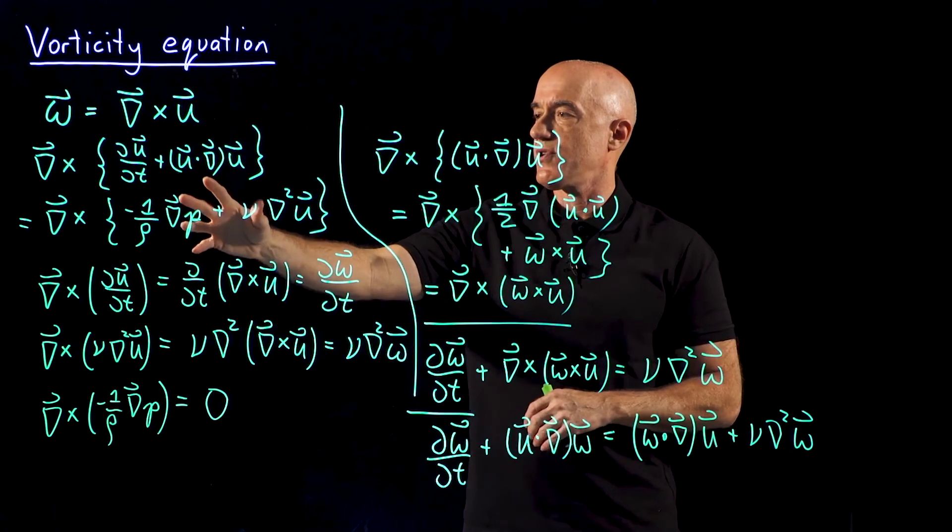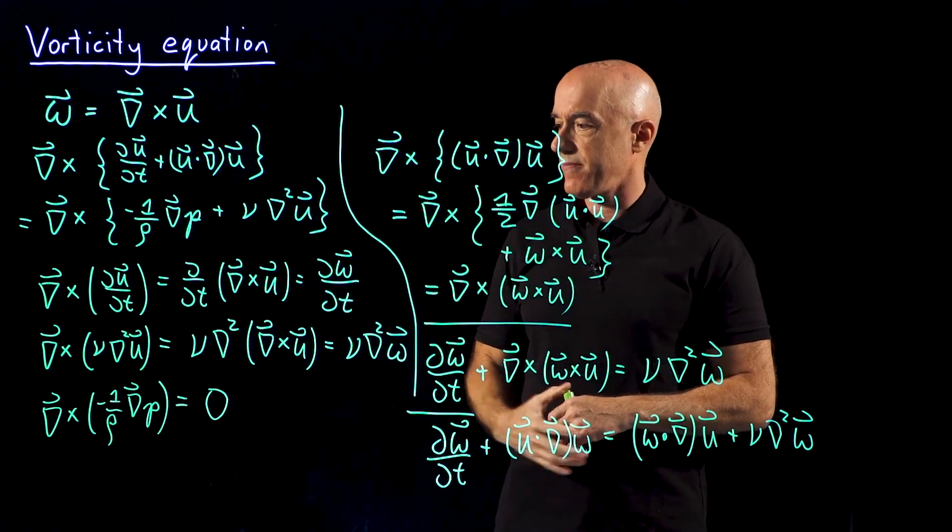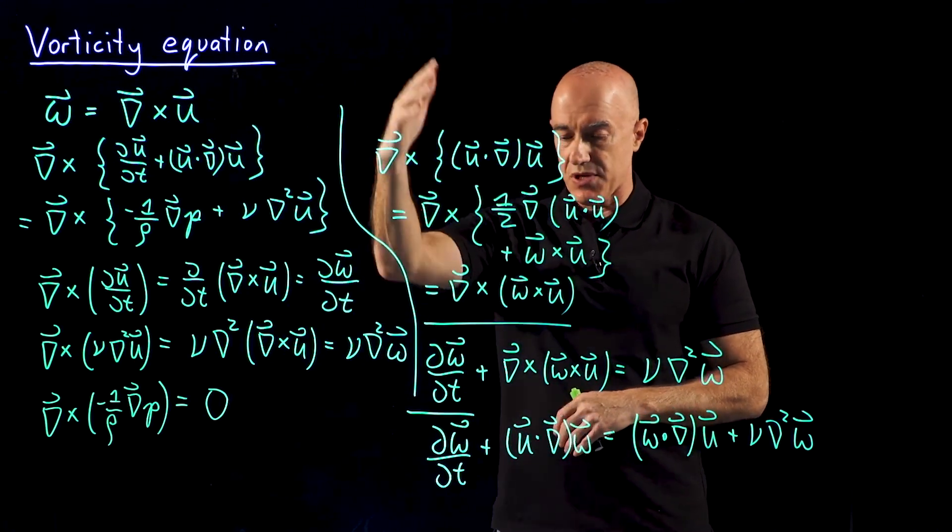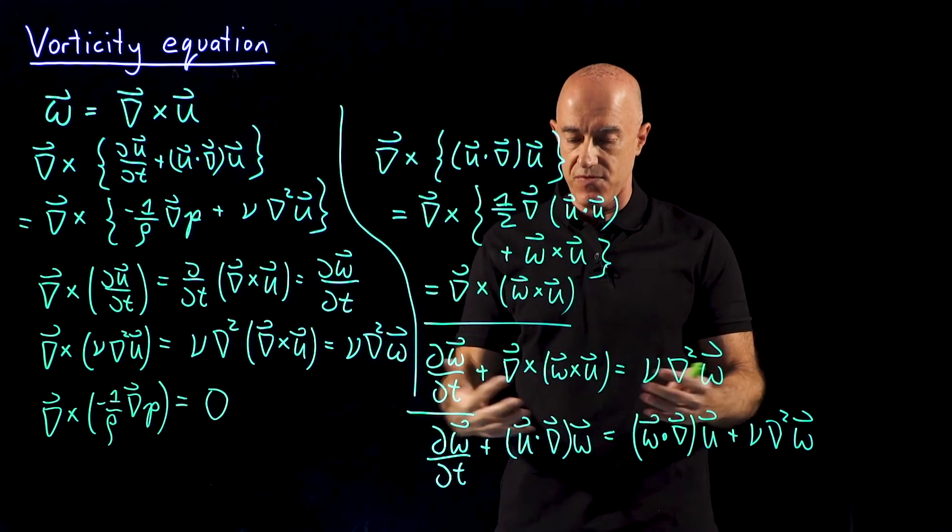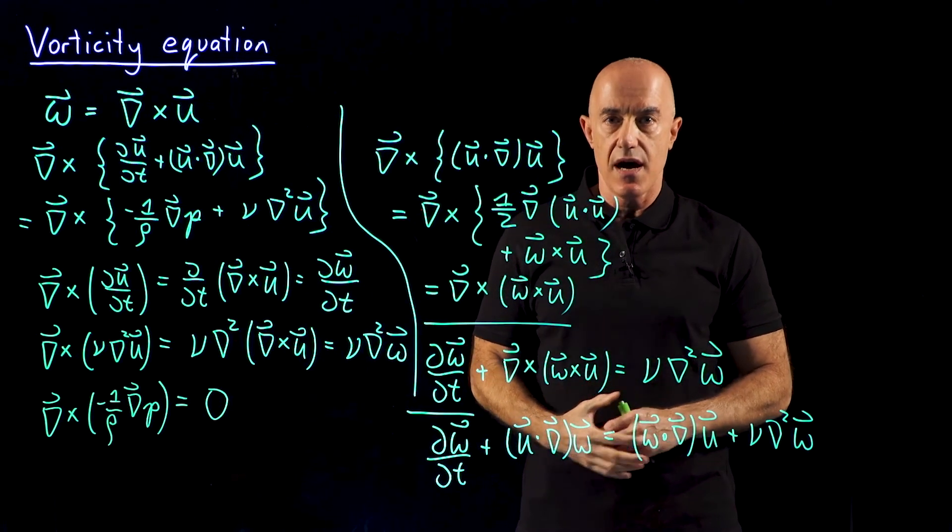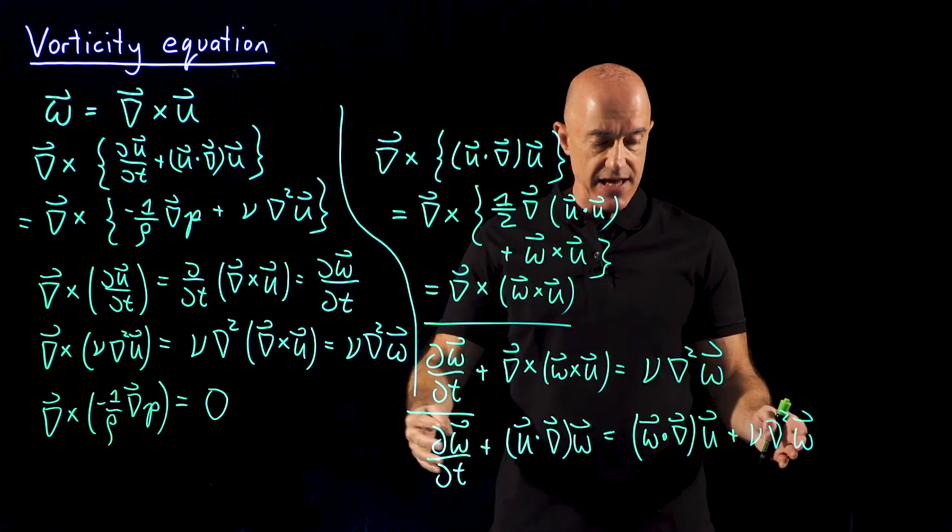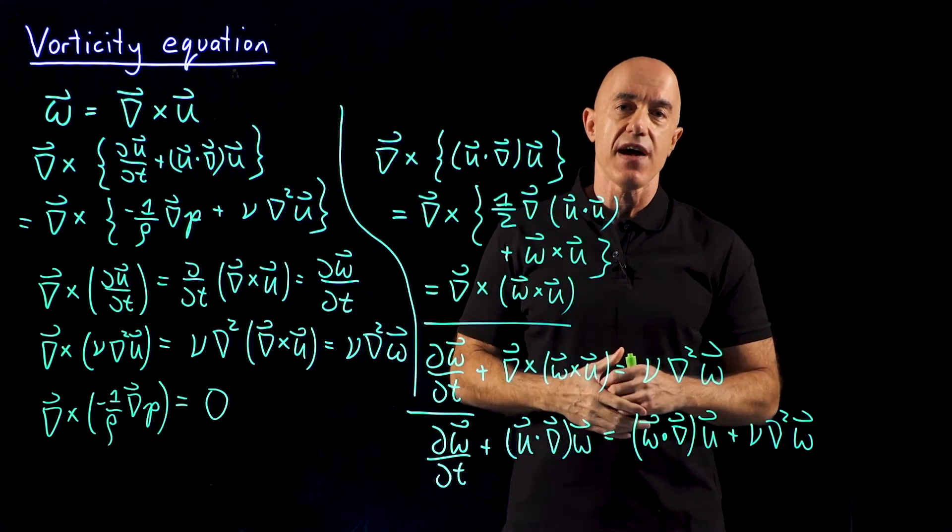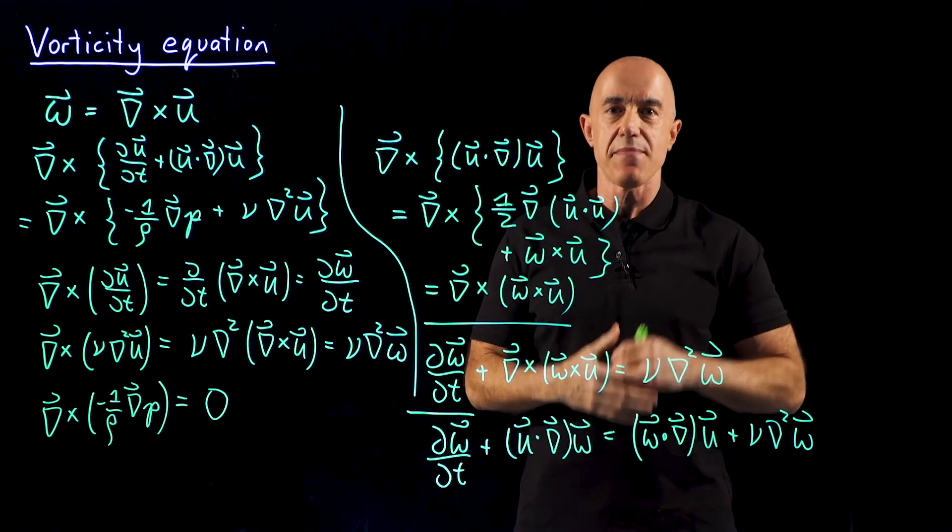So the pressure term is eliminated from the equation. Then, after some manipulation, we get two forms of the vorticity equation. We'll be working with this second form, which we'll simplify further when we go to a two-dimensional problem.